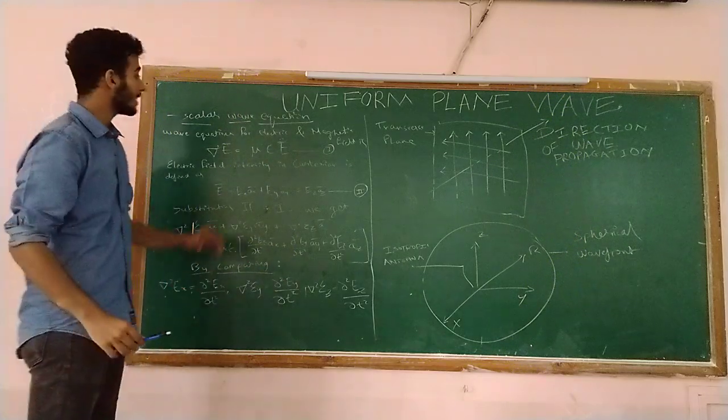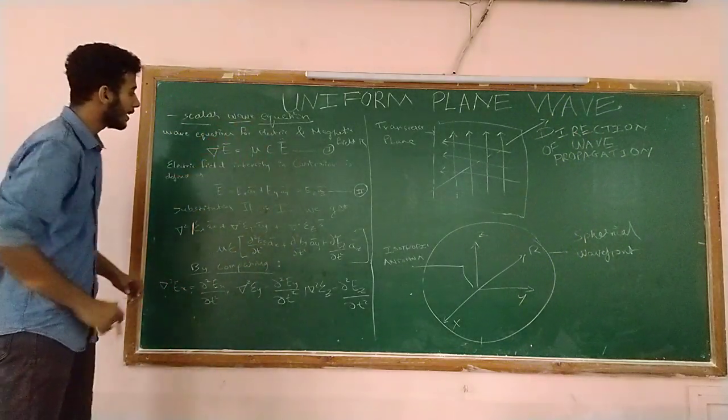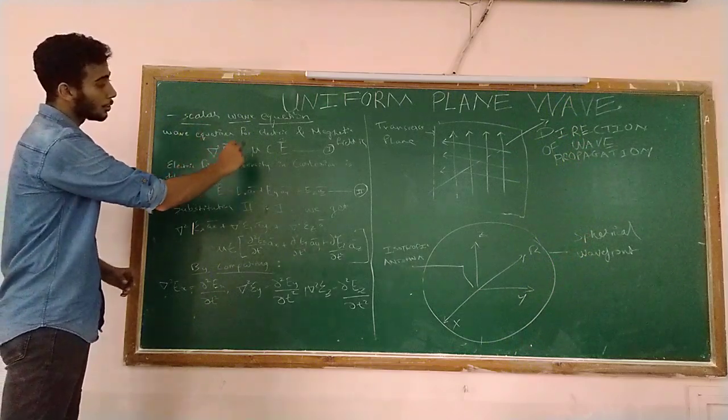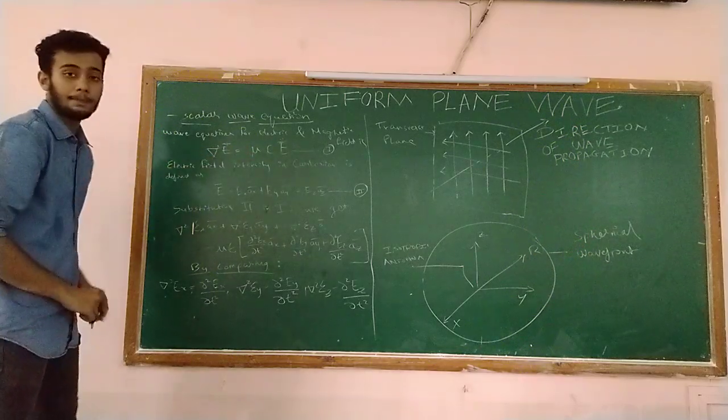So let us realize now the scalar wave equation. The wave equation for the electric and magnetic field is: del square E equals to mu epsilon E bar. Let us give this equation number 1.